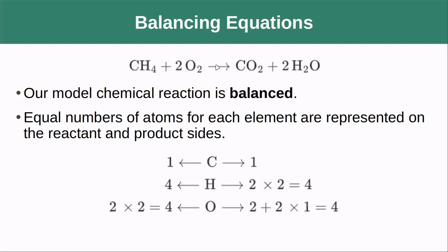If I did it for all of the elements, I would see that this is what we call balanced, meaning that we have the same number of elements on the left hand side as we do on the right hand side. We have one carbon on either side, we have four hydrogens on either side, and we have four oxygens on either side.